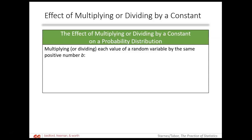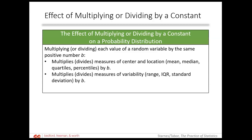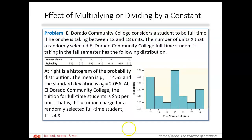So now what happens if we multiply or divide by a constant B? Mean plays nice — it's going to multiply those measures of center and location by B, and it's also going to multiply the measure of variability by B. However, the shape will not change. Multiplying or dividing by a constant has the same effect on a probability distribution as it did for the distribution of quantitative data back in chapter two.